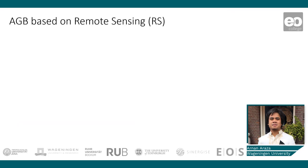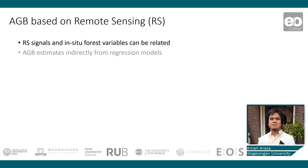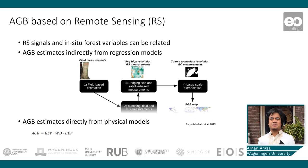But how does AGB mapping work? Usually, AGB estimates from the ground, like forest inventory data, are correlated with remote sensing signals, such as surface reflectance or backscatter intensity. AGB can then be predicted spatially from these images. This method is essentially an indirect method.